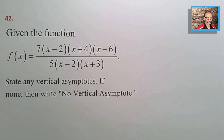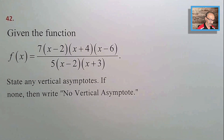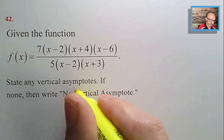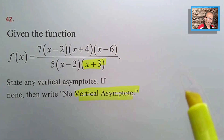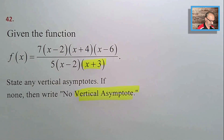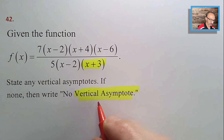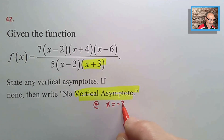Number forty-one: state any removable discontinuity. The common factor (x − 2) cancels from numerator and denominator, giving a removable discontinuity (hole) at x = 2.